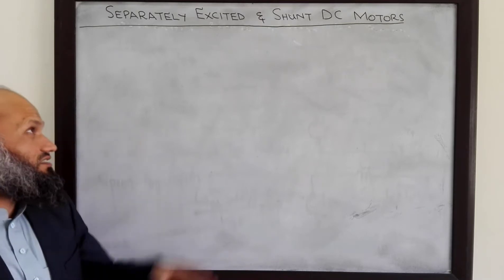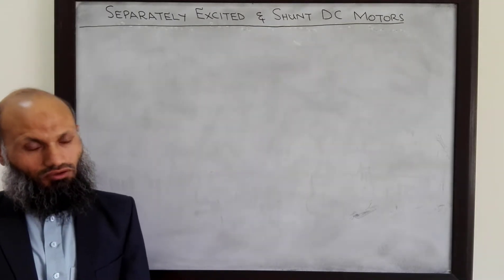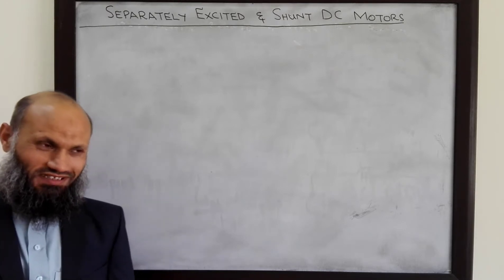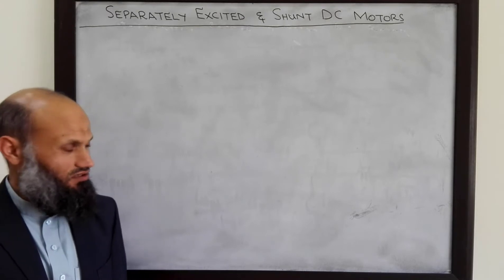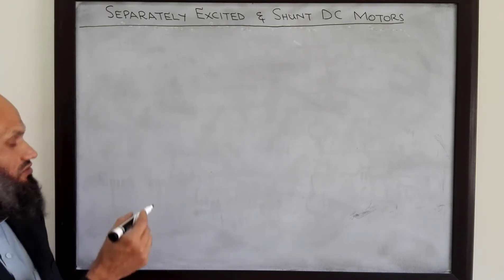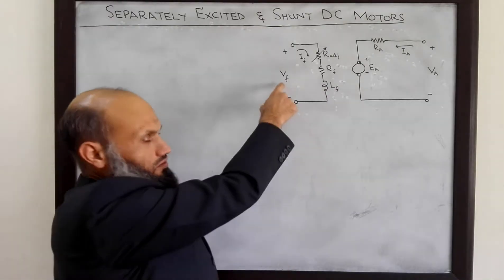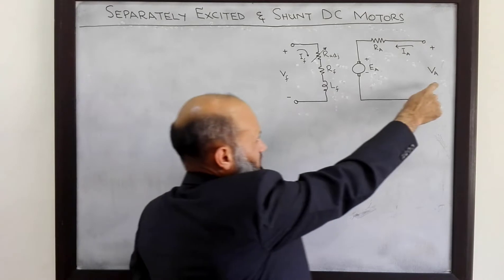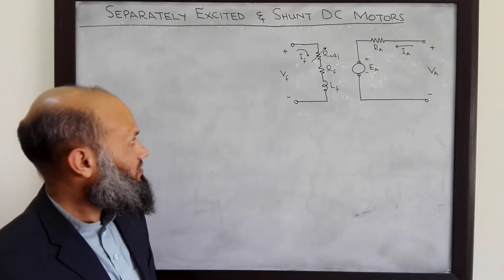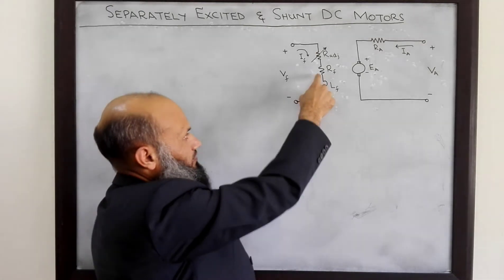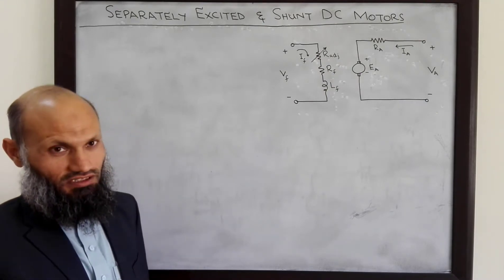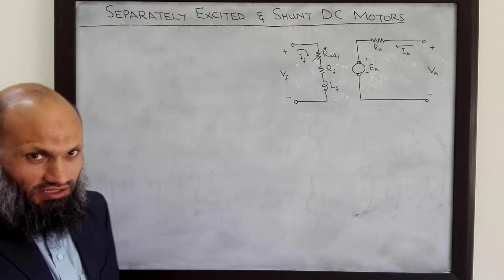We shall also talk about the terminal characteristics of these motors. In case of a separately excited DC motor, there are two different voltage sources — one voltage source to excite the field circuit and the second voltage source to excite the armature circuit. The equivalent electrical circuit is given by this diagram. Here LF indicates the field winding, RF is the resistance of the field winding, and sometimes an external variable resistor is added to control the speed of the motor.